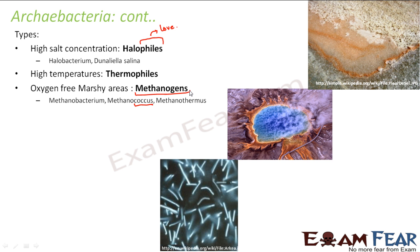So those are the three types of Archaebacteria. Let us quickly review: 'archae' means ancient, so these are the ancient bacteria. They have a very strong and rigid cell wall because of which they can survive in extreme conditions like very high salt concentration, high temperature, or oxygen-free areas. Based upon their habitat, they are classified into halophiles, thermophiles, and methanogens. Methanogens help in the production of methane gas from cow dung.